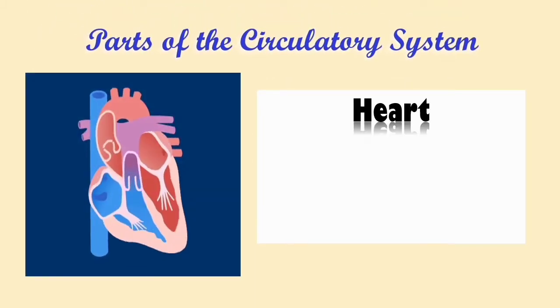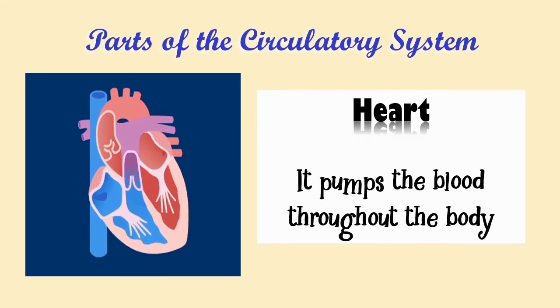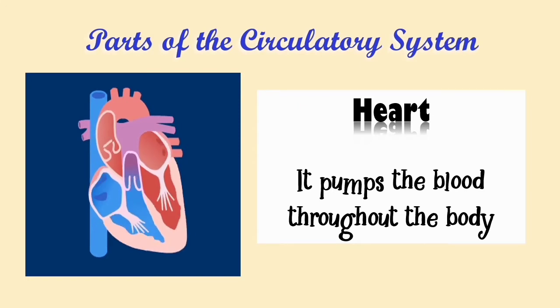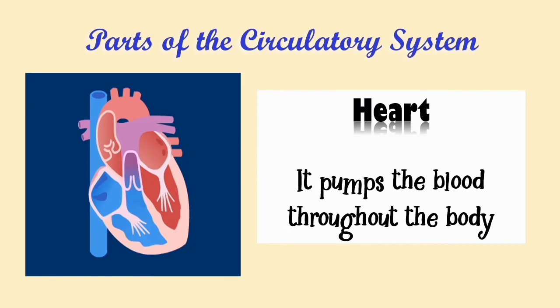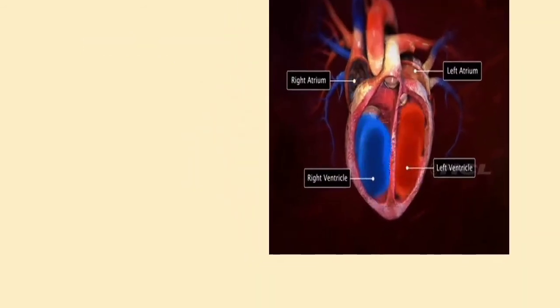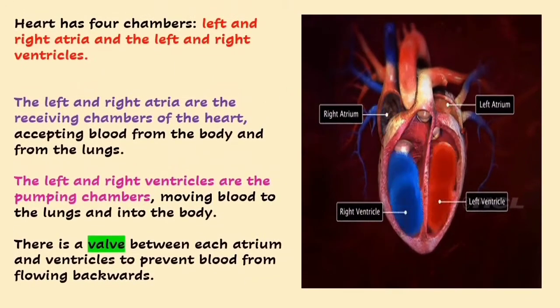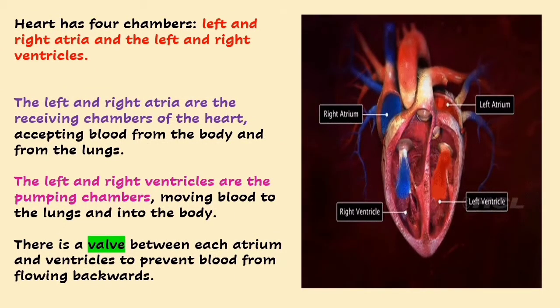Let us proceed to the major parts of the circulatory system. The first part is, of course, our heart. The heart pumps the blood throughout the body and is the main organ in the circulatory system. Our heart has four chambers: the two atria and the two ventricles.